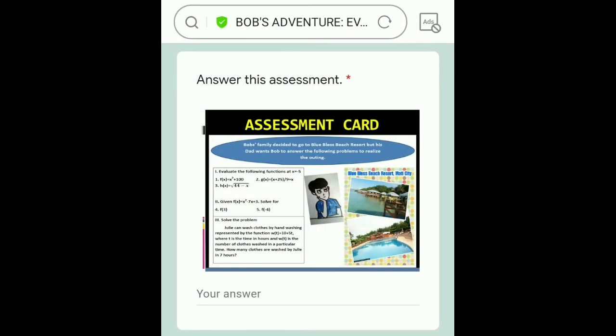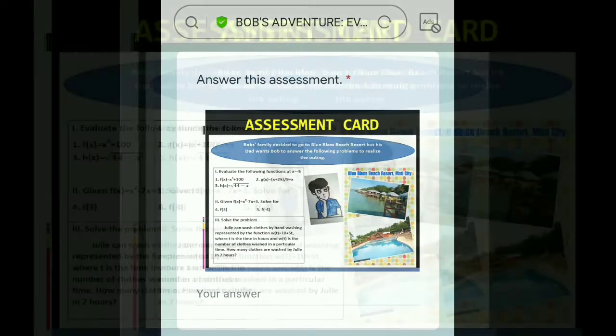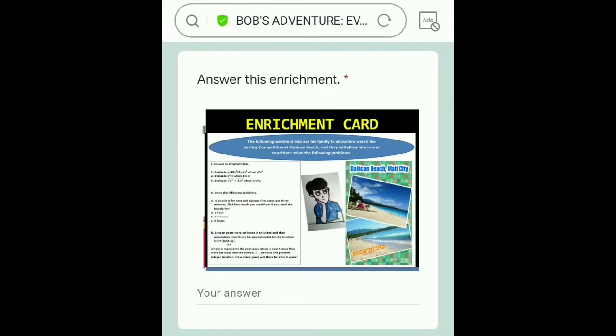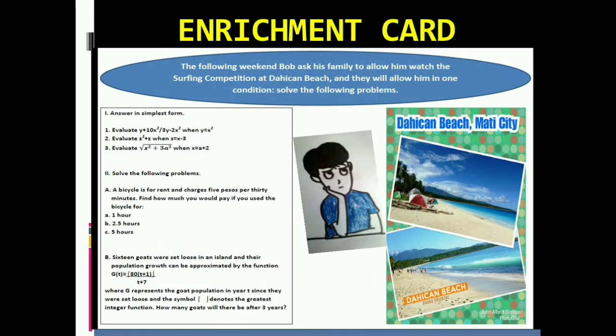In this card, Bob needs to answer the given problems to make the planned family outing be realized. There is a surfing competition at the Hicken Beach Mati City. Bob wants to go, but he will be allowed when he is done answering the problems. This is the Enrichment Card.